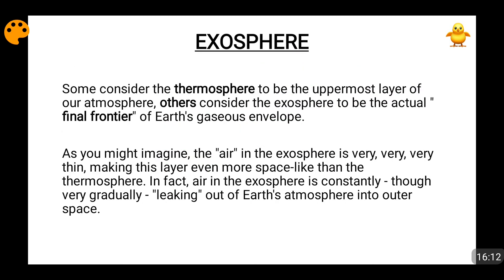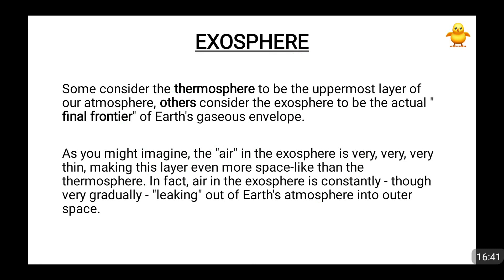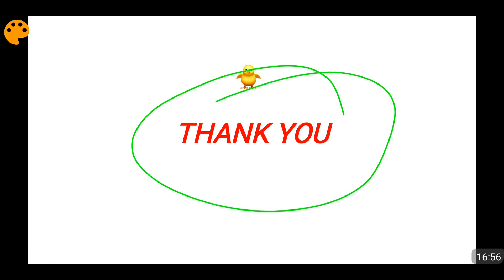Then the final layer comes — this is the exosphere. Many people say that the thermosphere is the outermost layer, but the exosphere is said to be the final most layer. The air is very, very thin and this is the layer from which air of the atmosphere is leaking out into outer space. Some scientists say that if we measure the distance between earth and moon, the exosphere extends halfway between earth and moon in some cases. Thank you for watching this video. Please subscribe to my channel, like my video, comment, and please share this video with more and more of your friends.